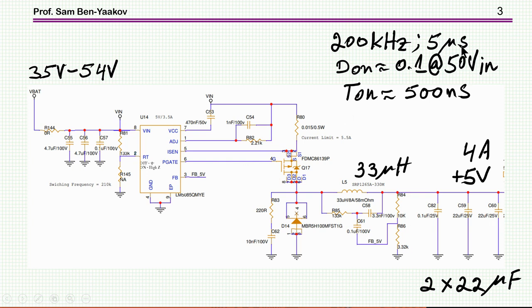So this is the buck converter running at 200 kilohertz, 5 microsecond period. The on time for 50 volt input and 5 volt output is about 0.1, so the on time is about 500 nanoseconds, half a microsecond. So this is the circuit.